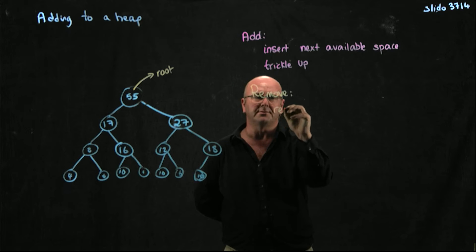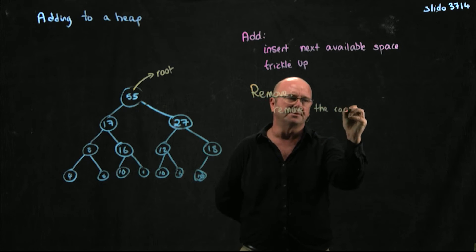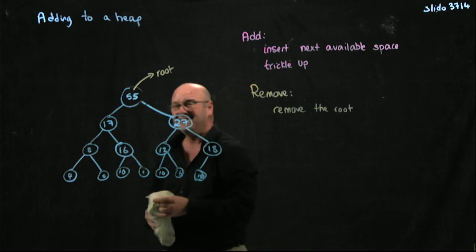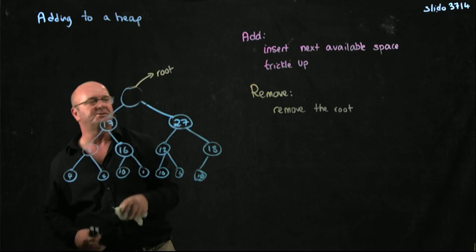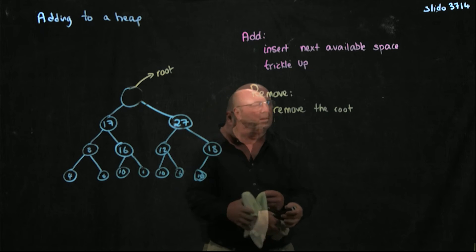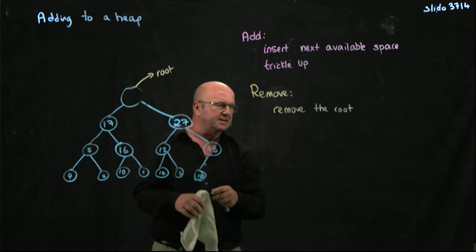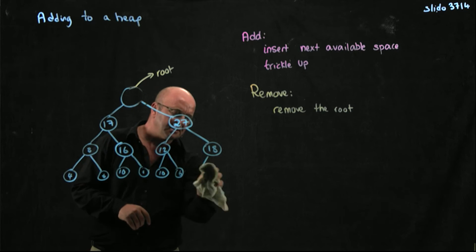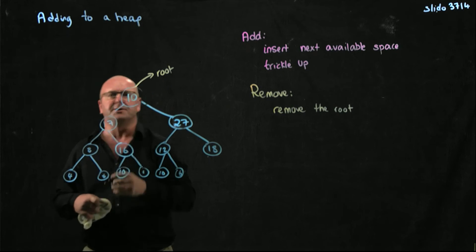So in a heap, you always remove the root. So if I remove my root, that leaves a bit of a hole in my tree. And so what am I going to replace it with? Well, I could replace it with the higher value node underneath it, and that would just move the hole down, and I could keep doing that. But the easiest thing to do is to remove the last element in the tree and insert that into this node.